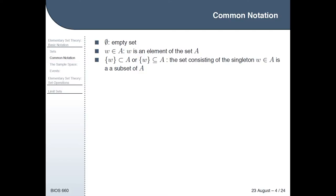If B is a subset of A, then that means every element of B is also contained in A. By definition, a singleton set — a set consisting of one element — is going to be a subset of A if the element W is an element of A.